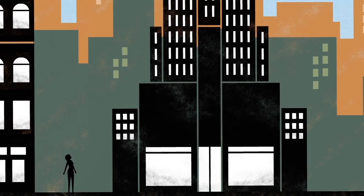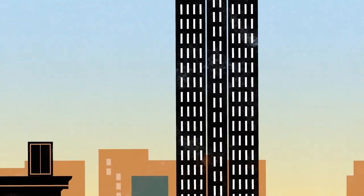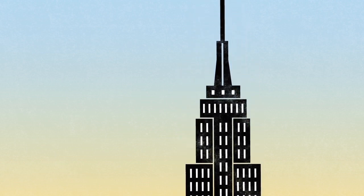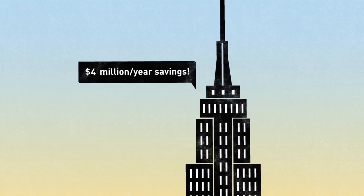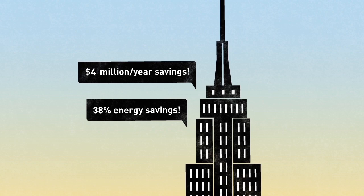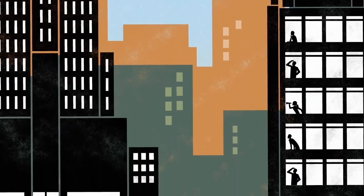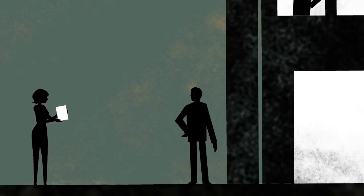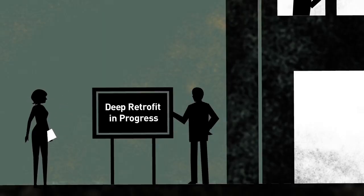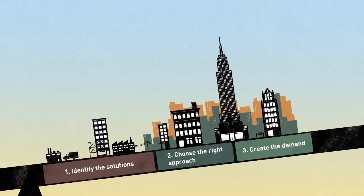We can showcase high-profile deep retrofits that get amazing results, like the Empire State Building, which is saving $4 million a year after reducing its energy use by 38%. Examples like these create demand from tenants who want better workplaces and owners who see the quantifiable savings and clear business case.